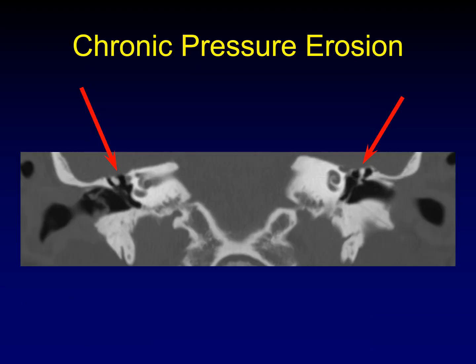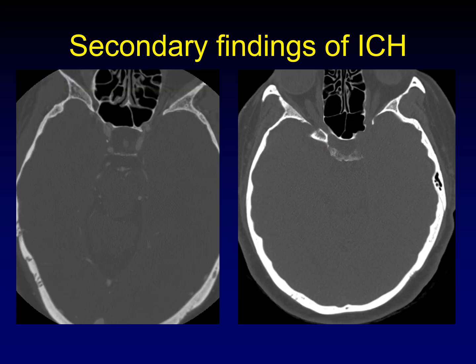You can also get dehiscence of the tegman from chronically increased intracranial pressure. The key CT finding is that the dura has been depressed — there is no longer air between the head of the malleus and the dura; the dura has fallen down and contacts the ossicles. Remember to look for secondary findings of intracranial hypertension: enlargement of the sella turcica, scalloping of the inner table of the calvarium at the middle cranial fossa, increased CSF space around the optic nerves, papilledema, tonsillar settling, and enlarged arachnoid granulations.